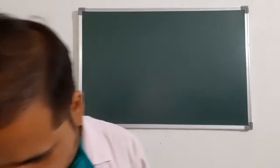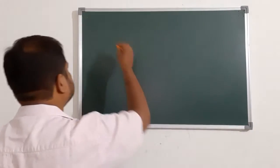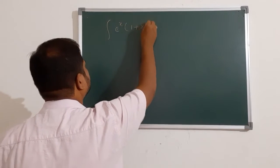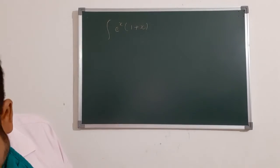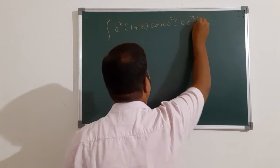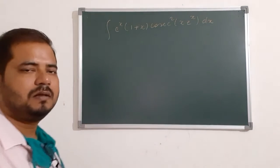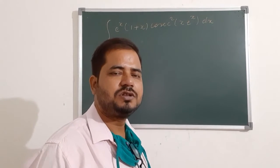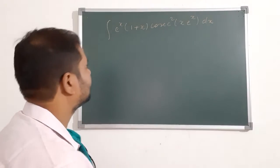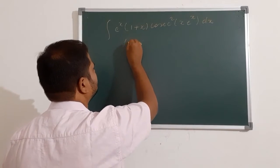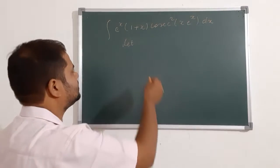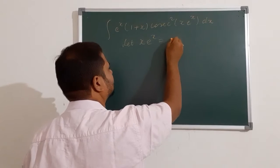So let us see. The first question is: integral of e to the power x times (1 plus x) divided by cos squared of (x·e to the power x), dx. We had already done some questions, so I am just going to repeat. In this, you see e to the power x times (1 plus x). So first, consider x·e to the power x equal to t.